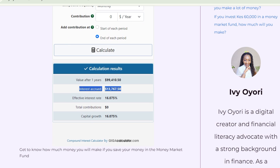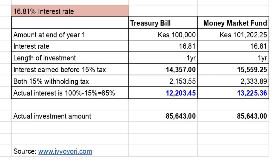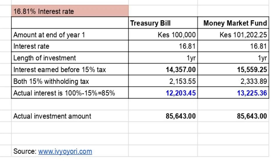Based on the results from the money market fund calculator, if you invest 85,643 shillings in a money market fund that earns the same interest rate as the treasury bill — which is 16.81% — you're going to get 15,559.25 shillings as your gross interest. After taking away the 15% withholding tax of 2,333 shillings, you'll make 13,225.36 shillings as your net interest. So with the same interest rate and the same investment amount, you make slightly more money from a money market fund — the difference is around 1,000 shillings.